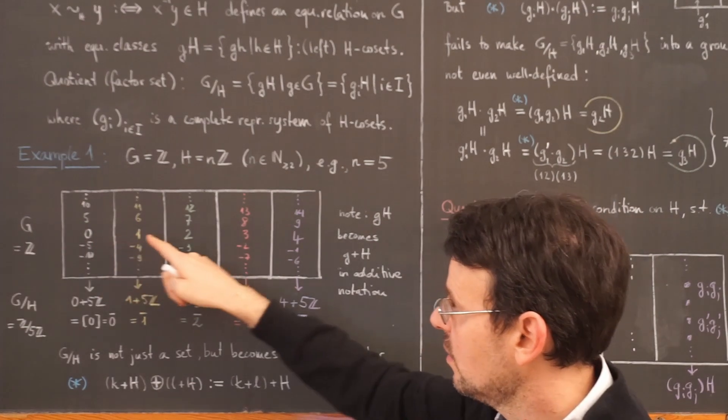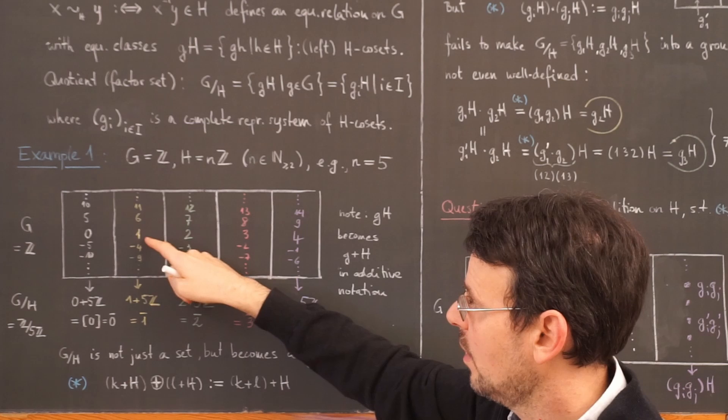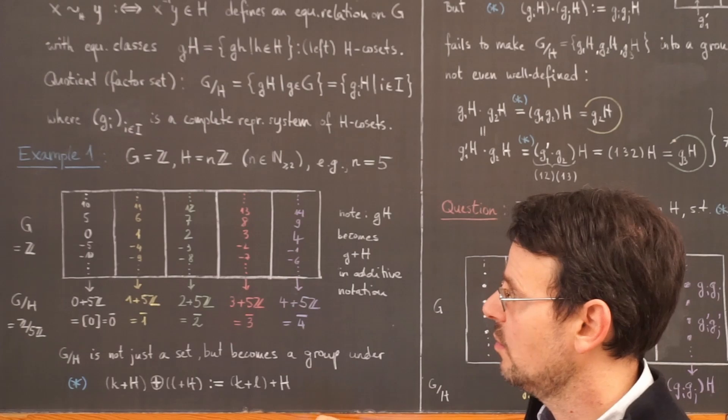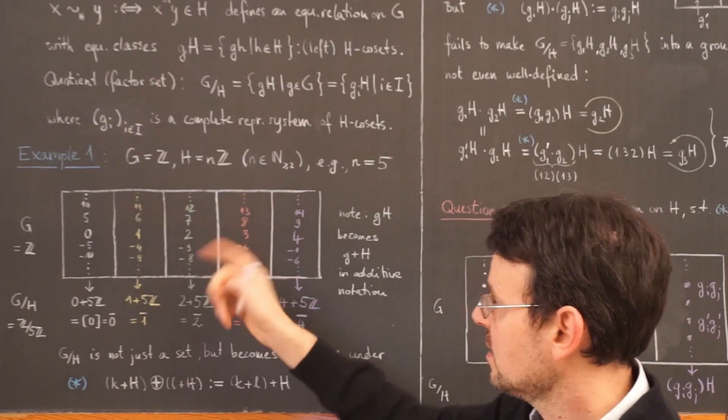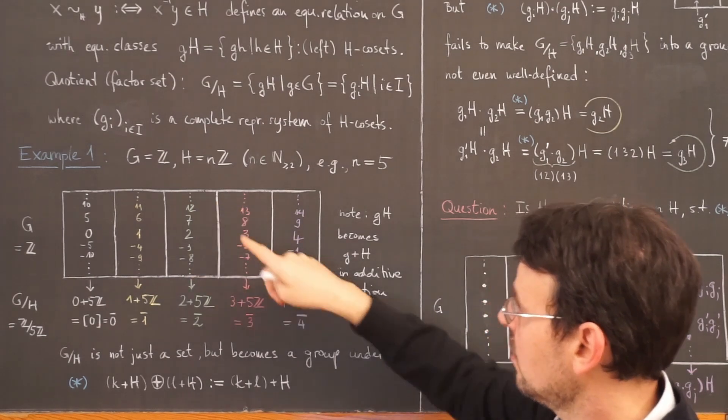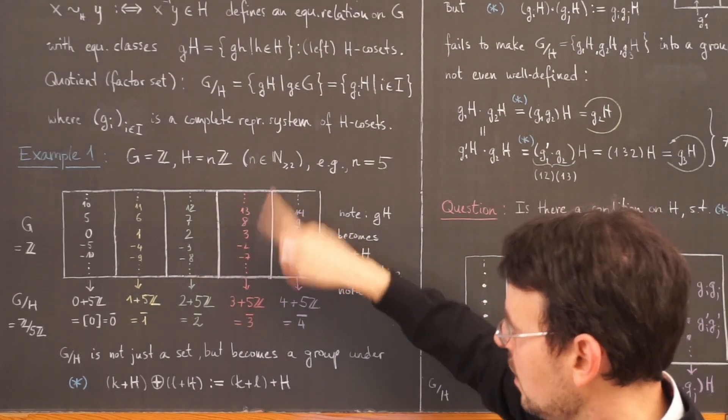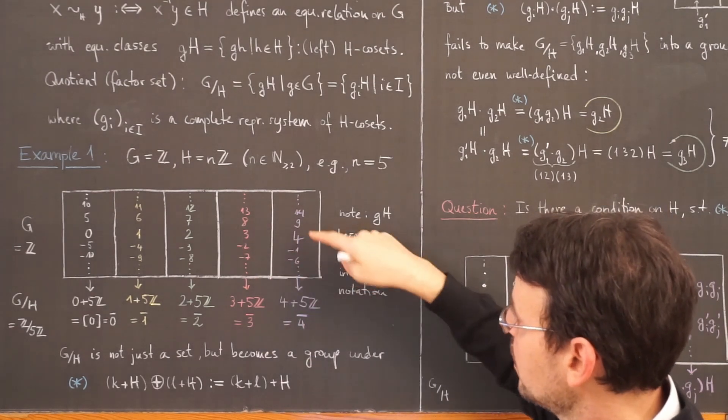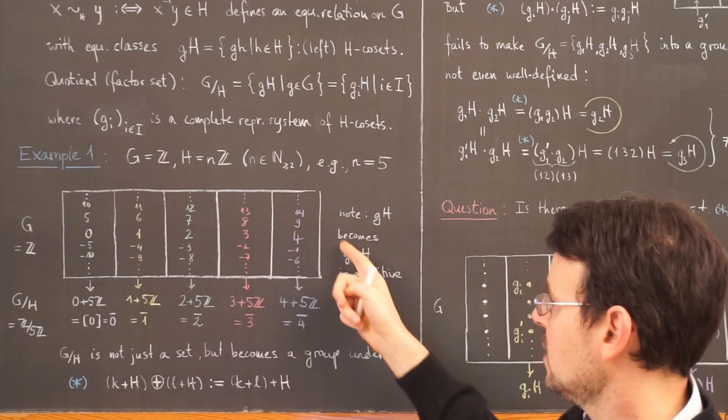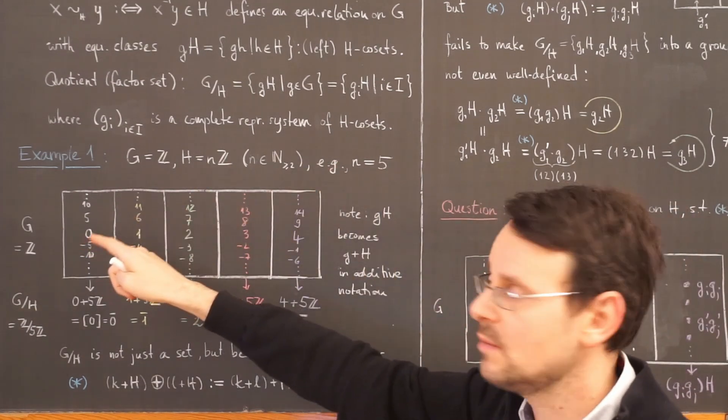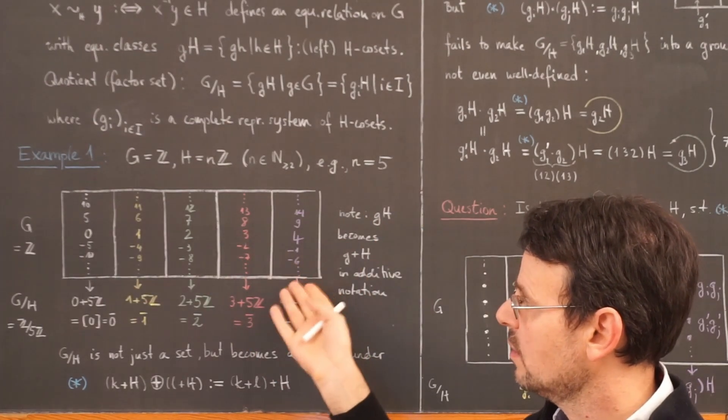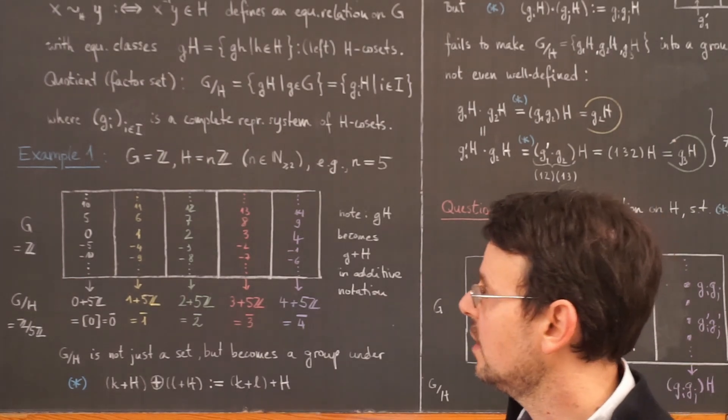The next coset contains the element 1 and 6 and 11 and minus 4 and minus 9 and so on in both directions. Then the next coset contains the 2 and 7 and 12 and so on, then 3, 8, 13 and in the negative direction, and then 4, 9, 14 and so on. And the next coset containing 5 is already the first coset we started with. These here are 5 different cosets that form a partition of the integers.